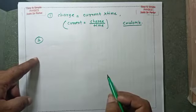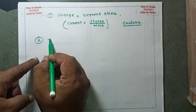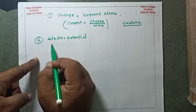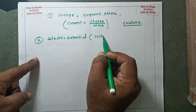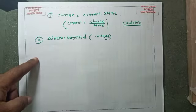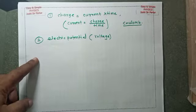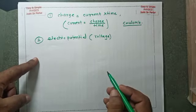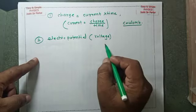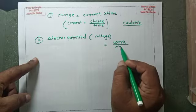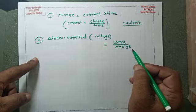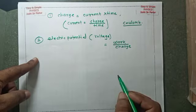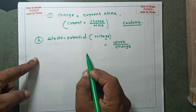The second physical quantity is electric potential, sometimes called voltage. Electric potential is defined as the amount of work done in bringing a unit charge, that is, the ratio of work to charge is said to be electric potential.